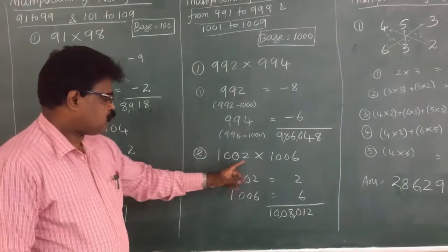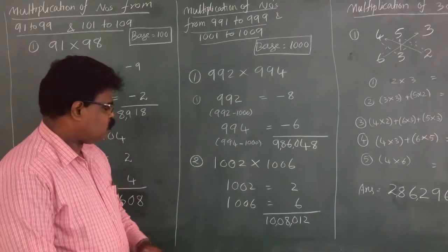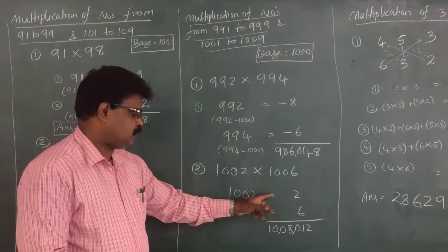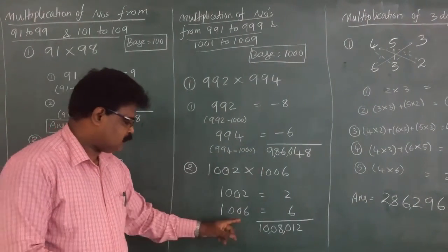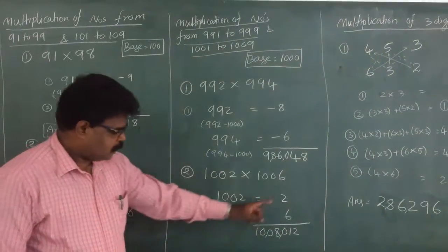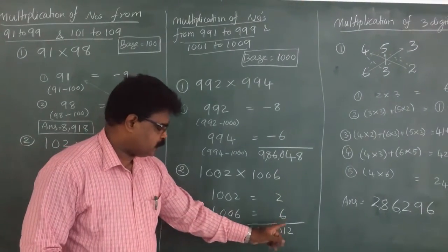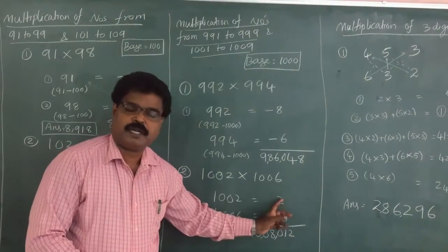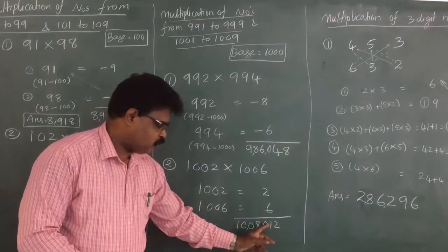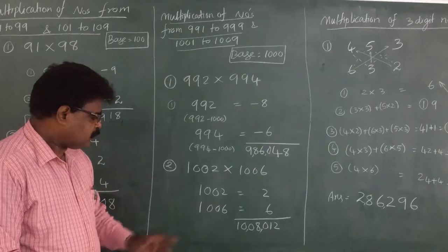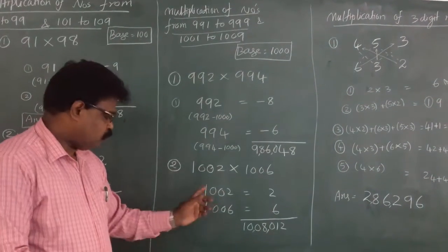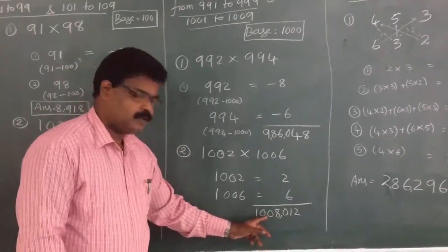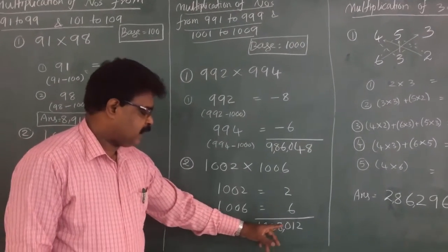Next example: 1002 into 1006. Subtract the base — 1002 minus 1000 equals 2, and 1006 minus 1000 equals 6. Multiply: 6 into 2 equals 12. This must be 3 digits, so write 012. Cross-add: 1002 plus 6 equals 1008. The final answer is 1,008,012.